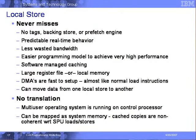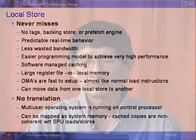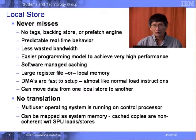The local store is very different in the Cell organization — we have the concept of never-miss on the local store. Because we don't have any prefetching or virtual memory associated with the local store, we have a physical address of the local store of 256 KB with no protection. It's up to you as a programmer to protect that address. We have no virtual memory mapping, and we have what we call Software Management Caching to provide a mechanism to access data when you need it.